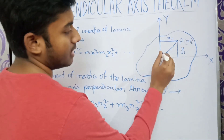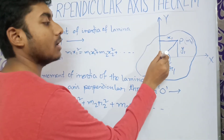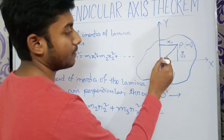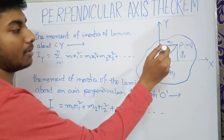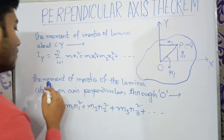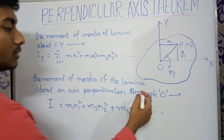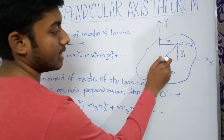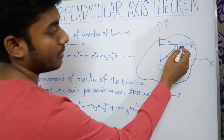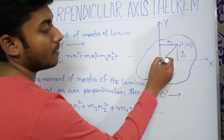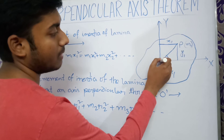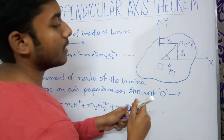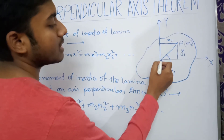Now we consider the axis perpendicular to the lamina passing through O. We have to calculate the moment of inertia about this perpendicular axis. The distance of the particle at point P from this axis of rotation is denoted by r1.